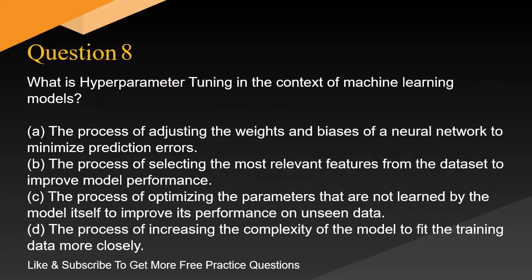Question 8. What is hyperparameter tuning in the context of machine learning models? A. The process of adjusting the weights and biases of a neural network to minimize prediction errors. B. The process of selecting the most relevant features from the dataset to improve model performance. C. The process of optimizing the parameters that are not learned by the model itself to improve its performance on unseen data. D. The process of increasing the complexity of the model to fit the training data more closely.